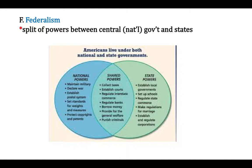There are also powers that are shared — concurrent powers. For example, with taxes: the 16th Amendment allows the federal government to tax income, and in North Dakota, the state can also tax income. Federalism is kind of like taking a sheet of paper and ripping it in half — one side represents the power of the federal government, the other side represents the state, and the torn line represents the shared powers. Be aware of these principles — we'll talk more about them on Monday. Have a good day.